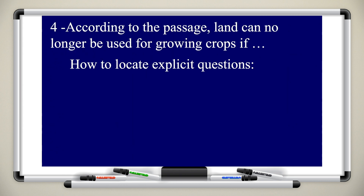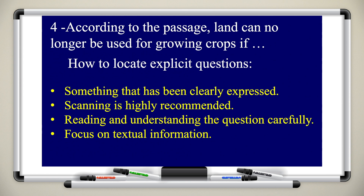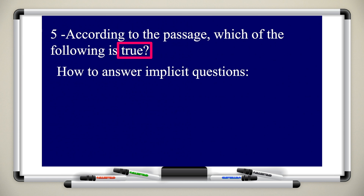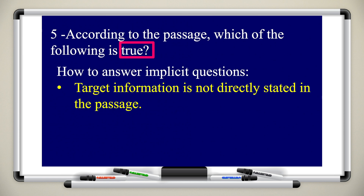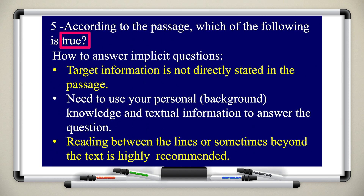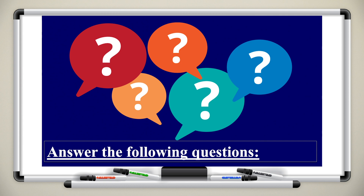Question four: according to the passage, land can no longer be used for growing crops if... To locate explicit questions — something that has been clearly expressed — scanning is highly recommended. Read and understand the question carefully, and focus on textual information. Question five: according to the passage, which of the following is true? For implicit questions, the target information is not directly stated in the passage. You need to use your personal background knowledge and the textual information. Read between the lines — understand the passage you are reading.